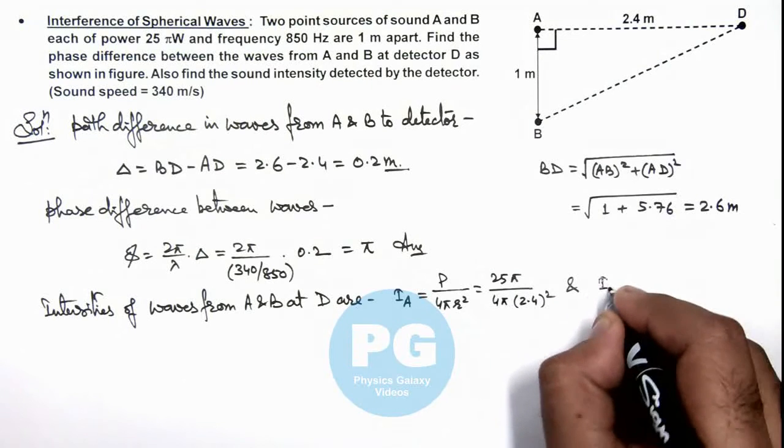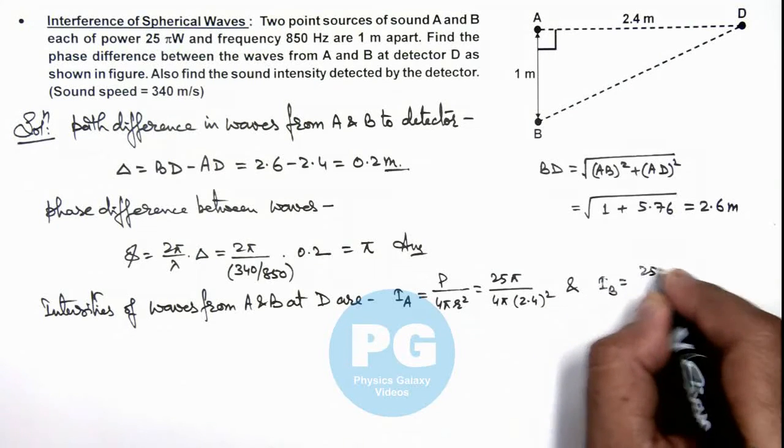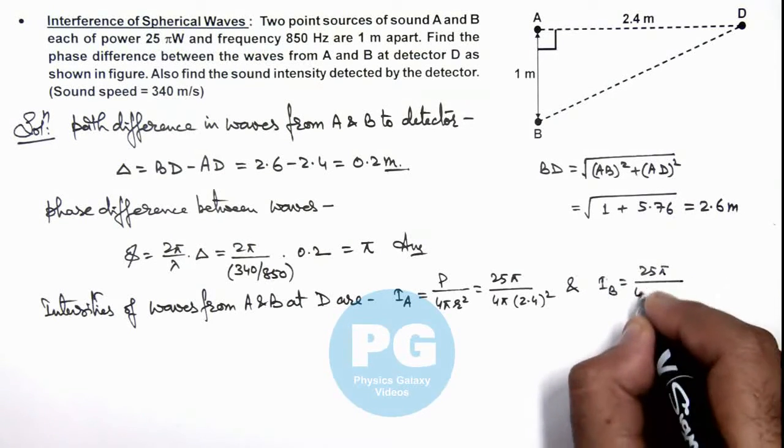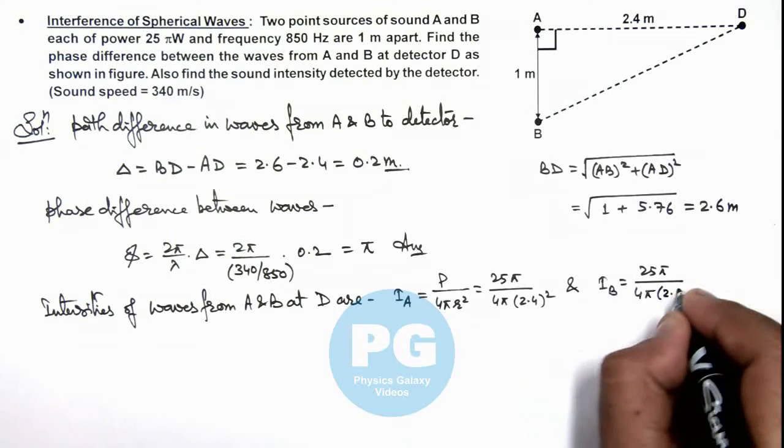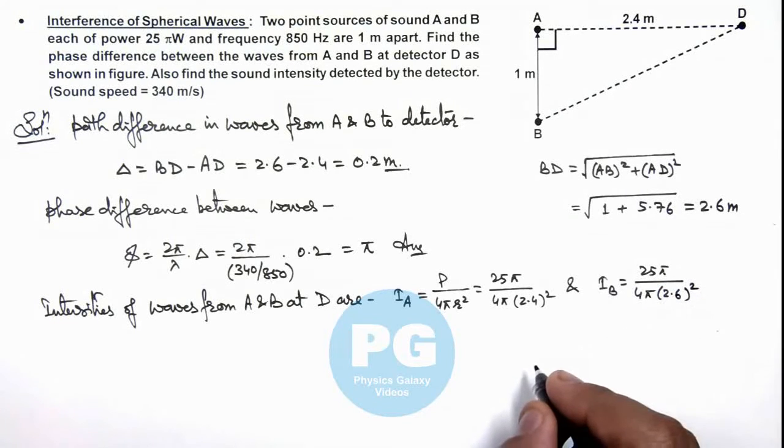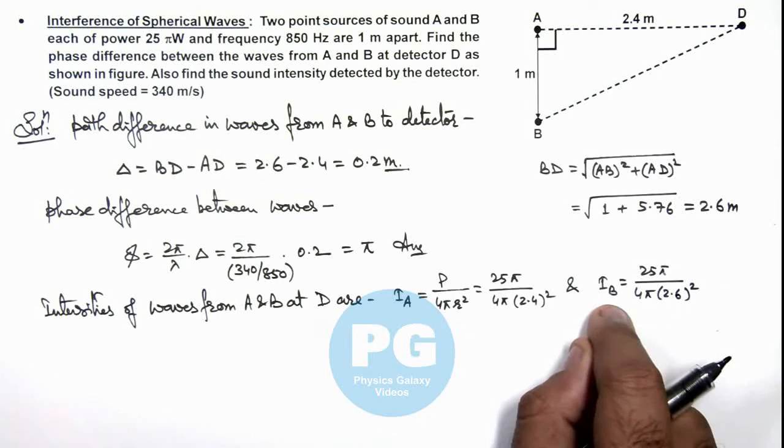Similarly, we can write IB, which is 25π divided by 4π multiplied by 2.6 whole squared. So as we have got the values of IA and IB.